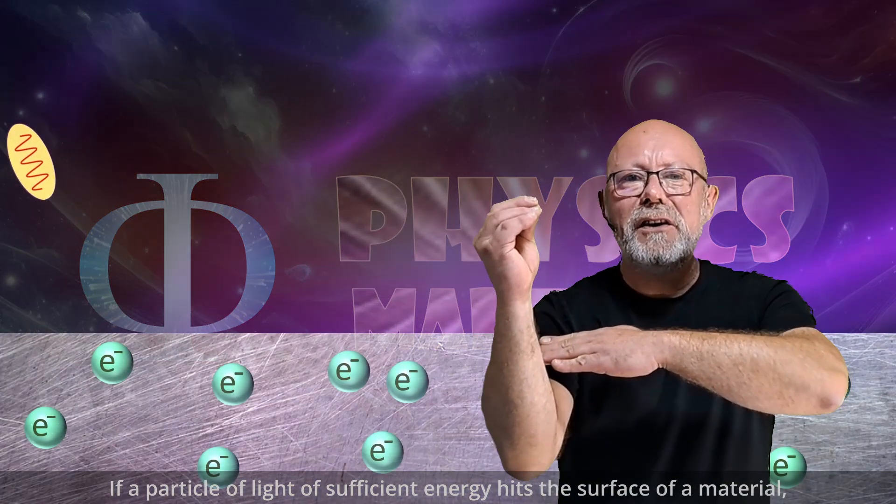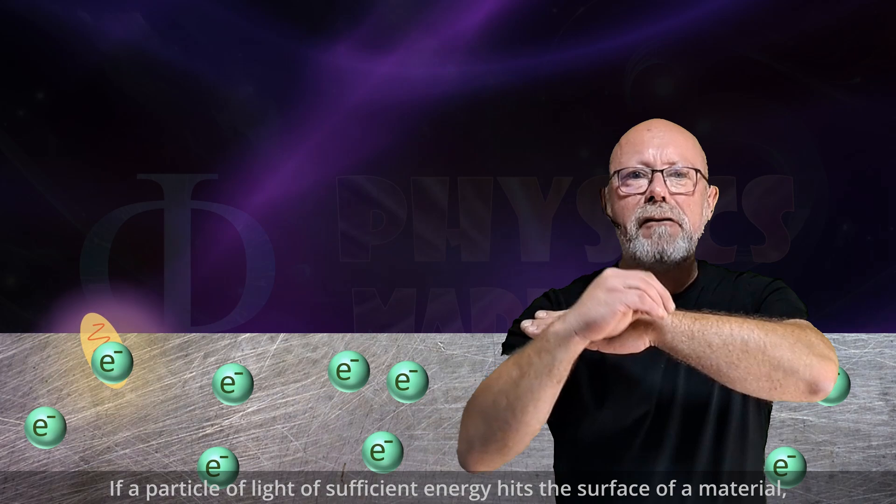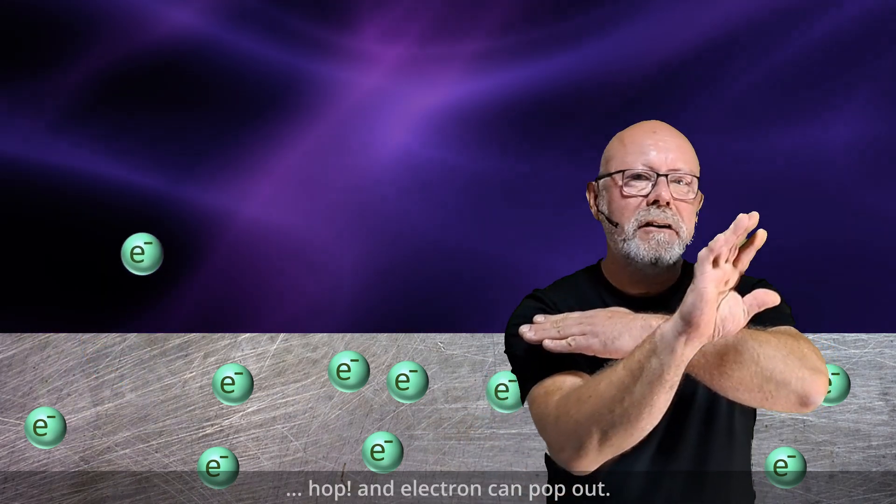If a particle of light of sufficient energy hits the surface of a material, an electron can pop out.